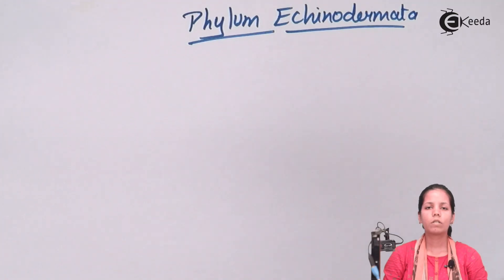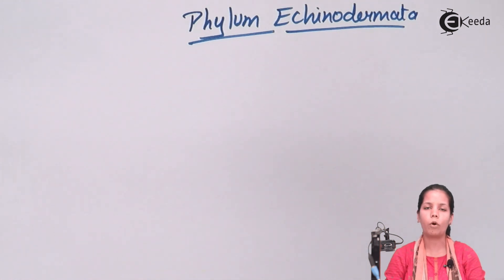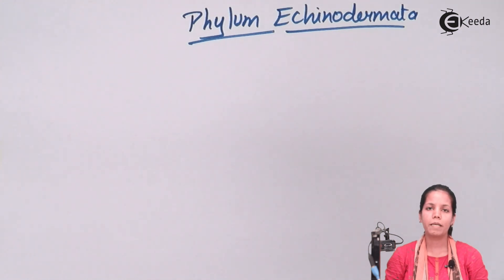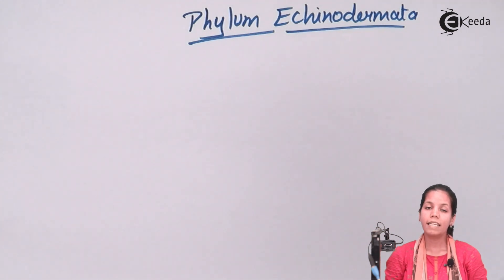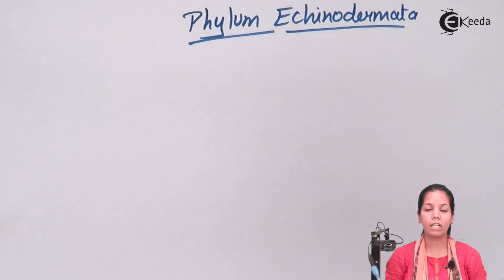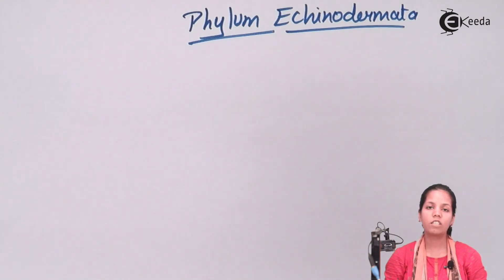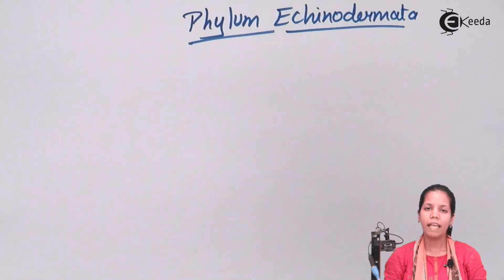If you closely observe Phylum Echinodermata, starfish is one of the prominent members of it. Starfish basically resides at sandy or coastal areas around the sea. Starfish cannot prepare its own food — we all know it's an aquatic animal. It tries to eat small fishes or precisely molluscs. It has radial symmetry.